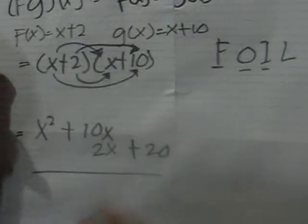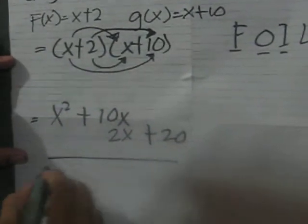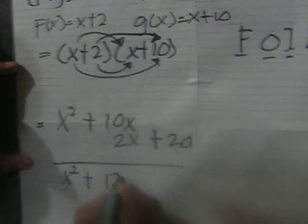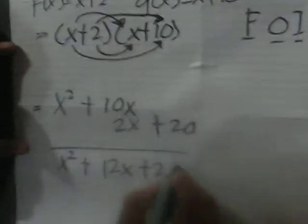Add them. Combine the like terms. x squared plus 12x plus 20 is the answer to this problem.